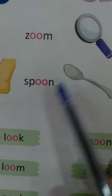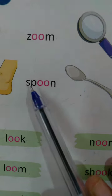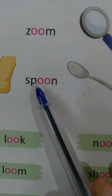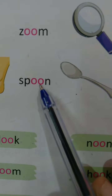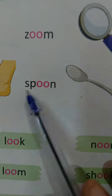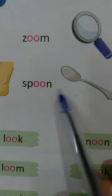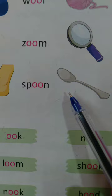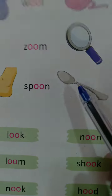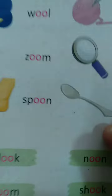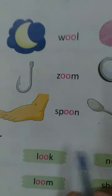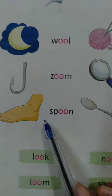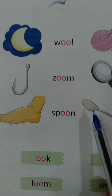Next is Spoon. S P double O N — Spoon. Spoon means Chammach.